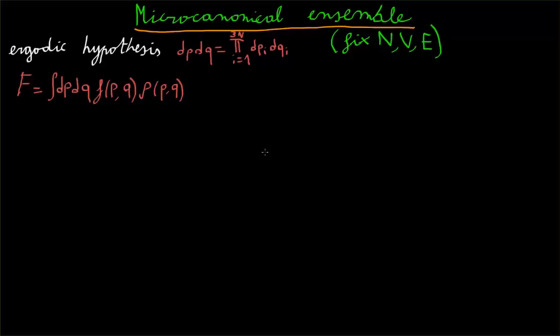Having talked about the ergodic hypothesis, we can finally talk about the microcanonical ensemble. That is, we're finally ready to derive the behavior of a system in which we fix the number of particles, the volume, and the total energy in the framework of statistical mechanics.